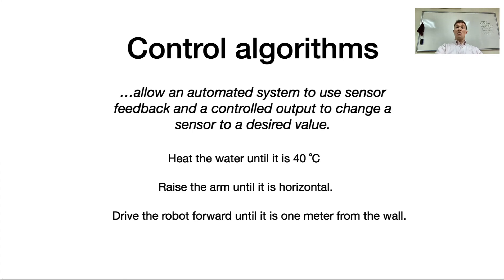It could be in a robot arm, you are raising an arm until it is horizontal. So turn that motor until the arm is where you want it to be. Or you can imagine talking about driving a robot. It could be steering the robot so that it stays in the middle of the road or driving a robot forward until it is one meter from the wall. So this is the idea behind a control algorithm.